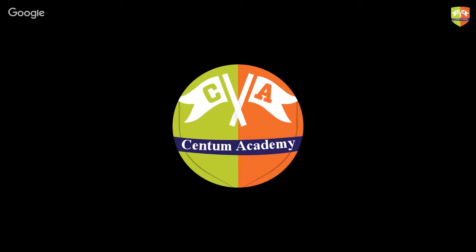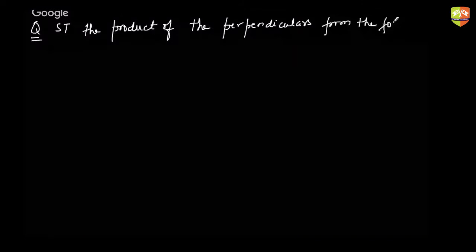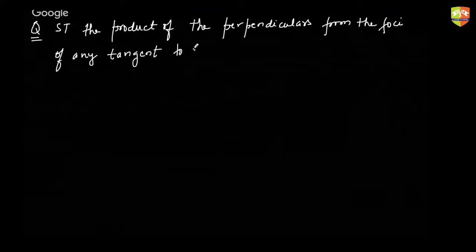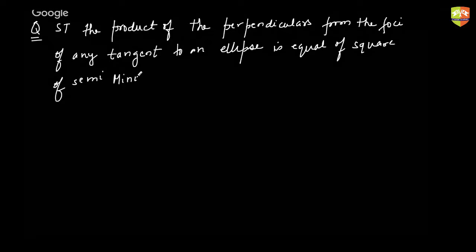The theorem to be proved: the product of the perpendiculars from the foci on any tangent to an ellipse is equal to the square of the semi-minor axis, i.e., b².